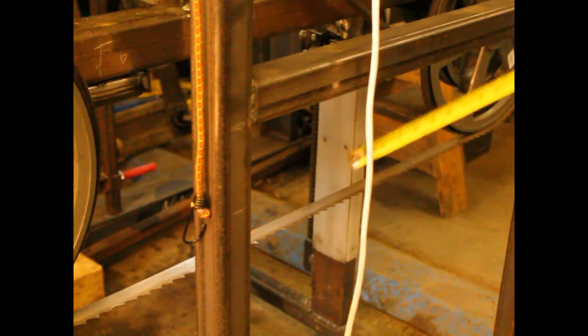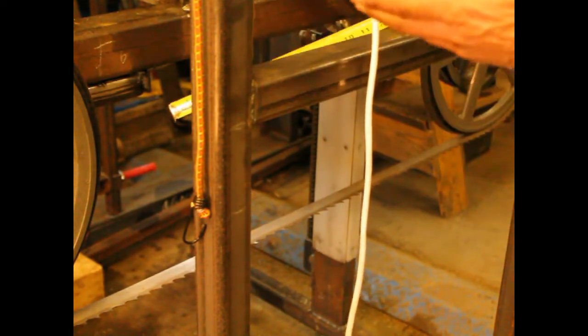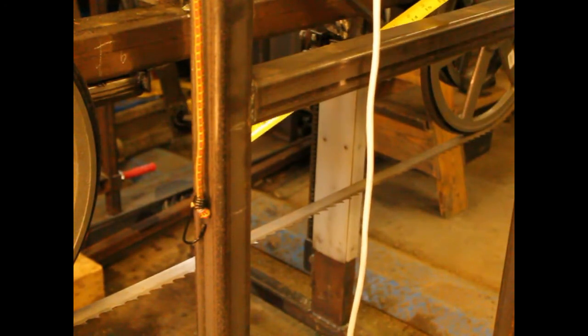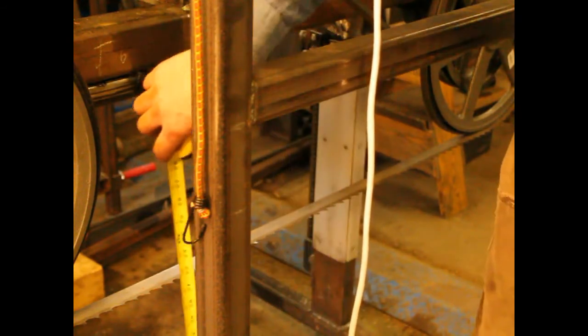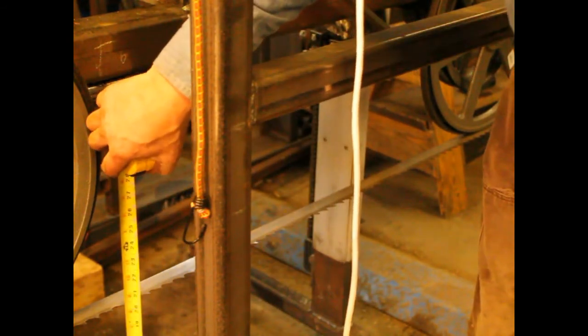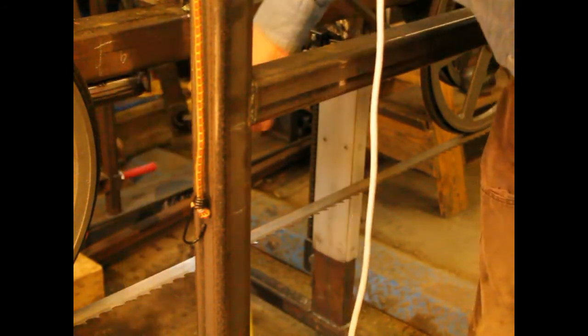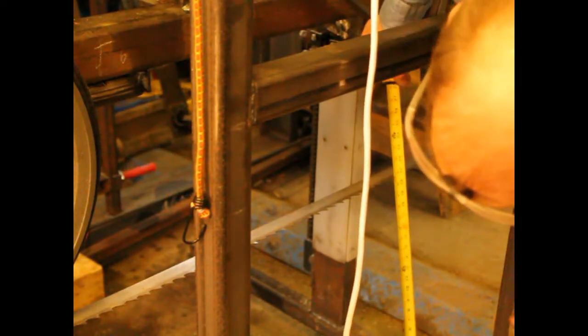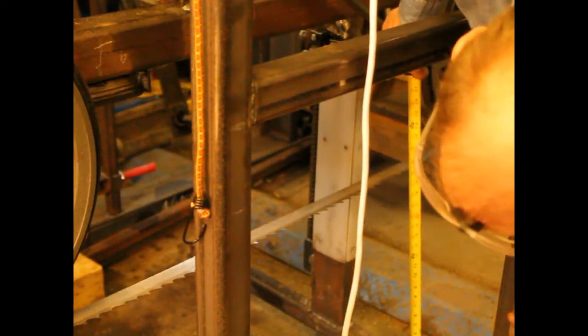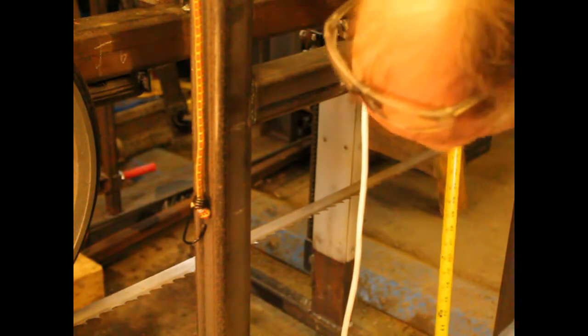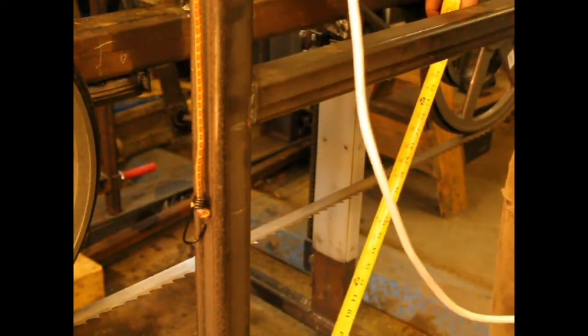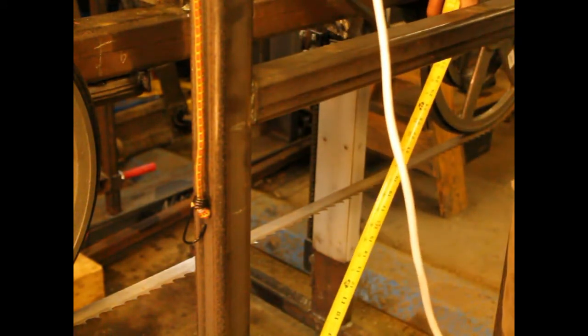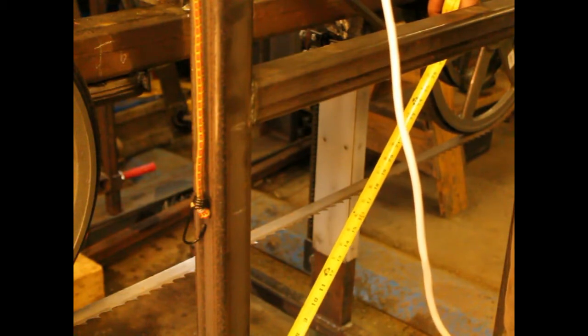Alright, I've got the blade tension to 1,000 psi on the gauge. The puck sliders are adjusted, the equalizer is adjusted, and right now it's setting at 20 inches and 20 inches within a 32nd of an inch. So if I go up and it comes back and I can set it at the same place, then I know it's accurate.